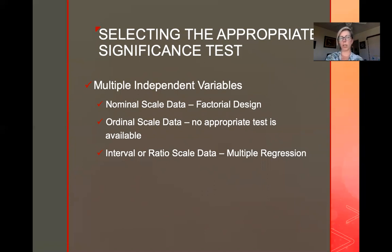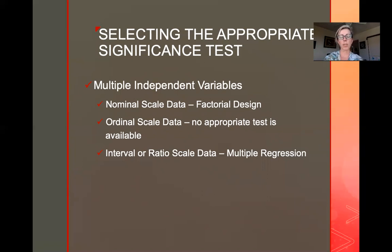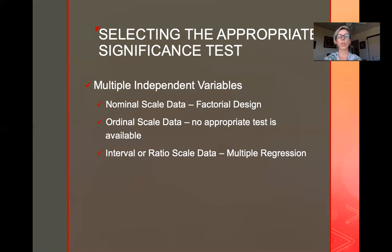There's no standard test for ordinal scale data with multiple independent variables — ordinal scale data is difficult. As we talked about last week, we often treat it like interval or ratio data, which is not entirely accepted by most statisticians, but it is what often happens. Lastly, if we have multiple independent variables for interval or ratio data, we'll use multiple regression.